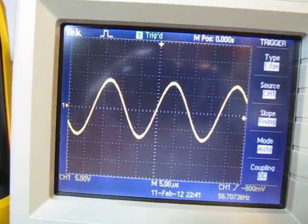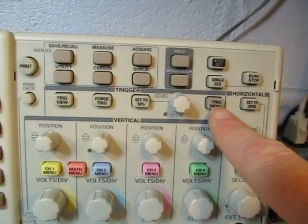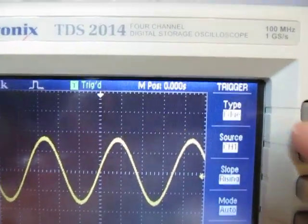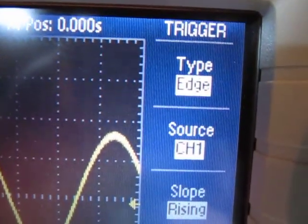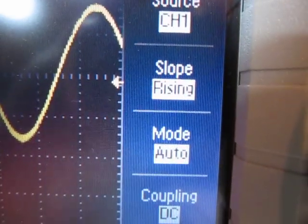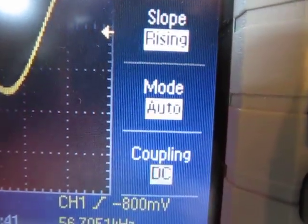But the trigger mode control works the same way. So by hitting the trigger menu button here, I can see the trigger menu on the side here. What I'm going to trigger on, the type, which in this case, you can see it says edge, the source, channel one, rising edge. And there's the mode right there. It says auto.